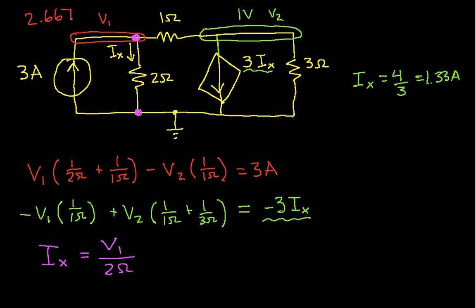Now suppose, just as an afterthought to make sure it's clear how we would do this, suppose that I'm also interested in finding this current I through the 1 ohm resistor. Well, that's not hard to do once I know the voltages. This I would be V1 minus V2, that's the voltage across the 1 ohm resistor, divided by 1 ohm. So I plug in the values that I have for V1. I have 2.667 minus 1 volt over 1 ohm, which would give me 1.667 amps.